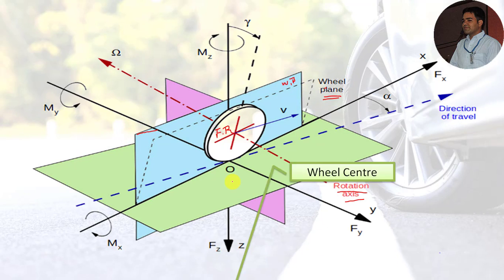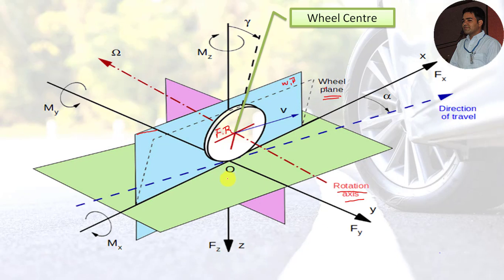The second important terminology we need to define is wheel center. The wheel center is the intersection of the spin axis and the wheel plane — that is, the intersection of the axis of rotation with the wheel plane.